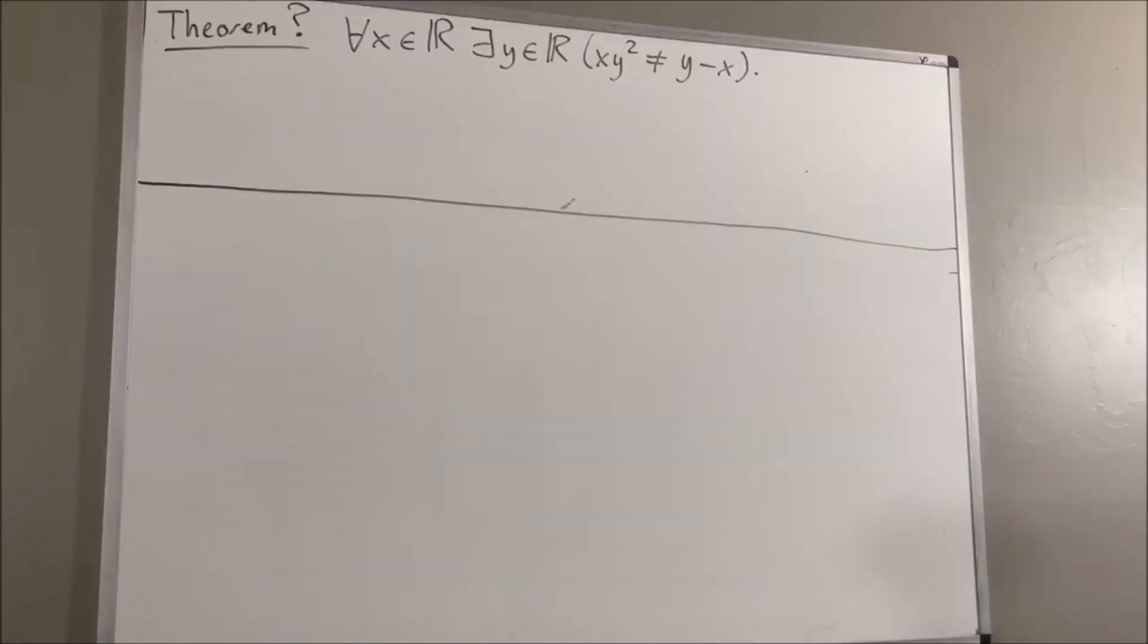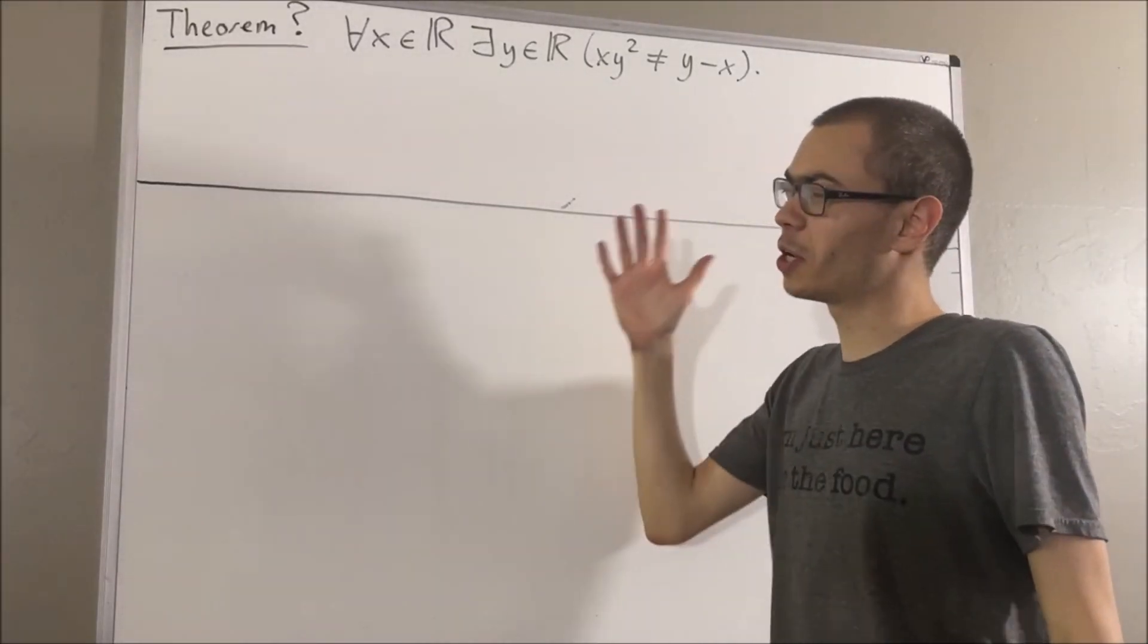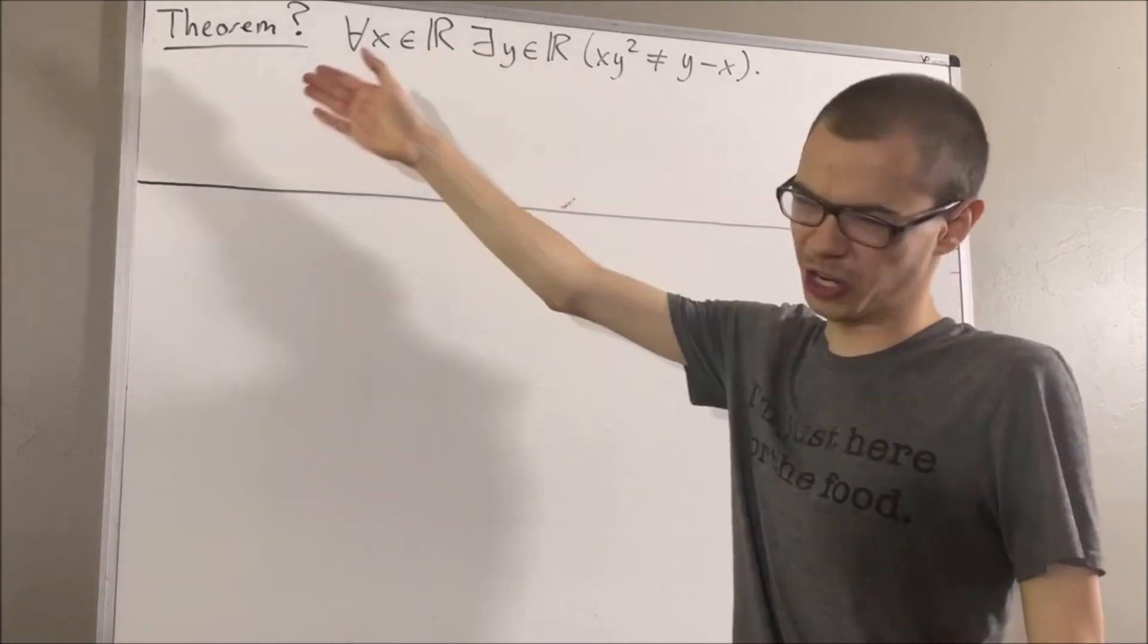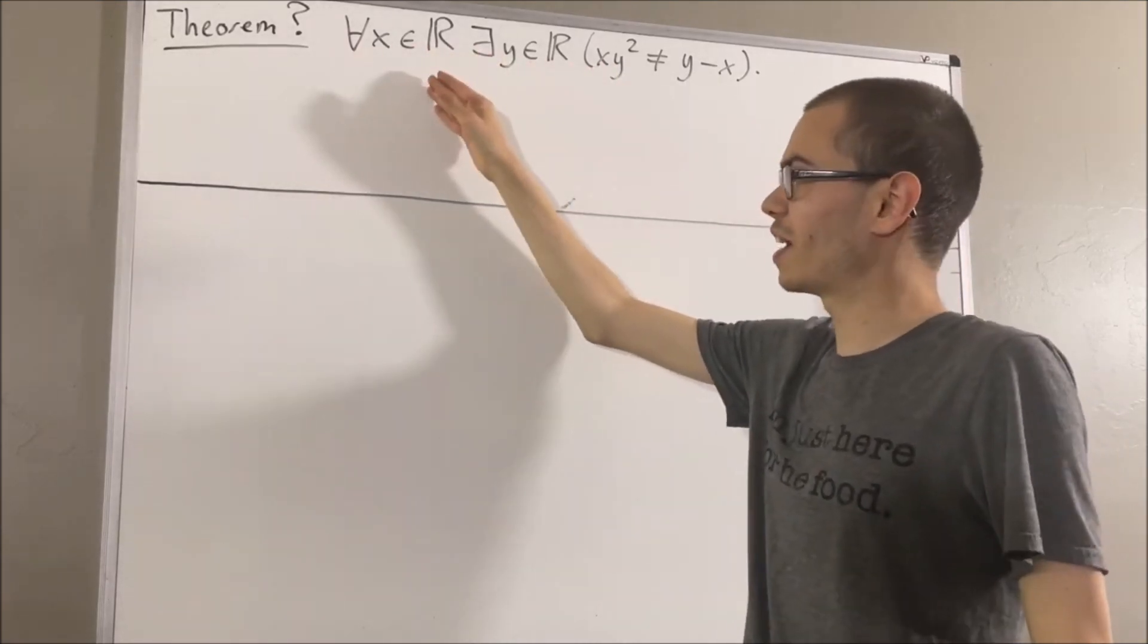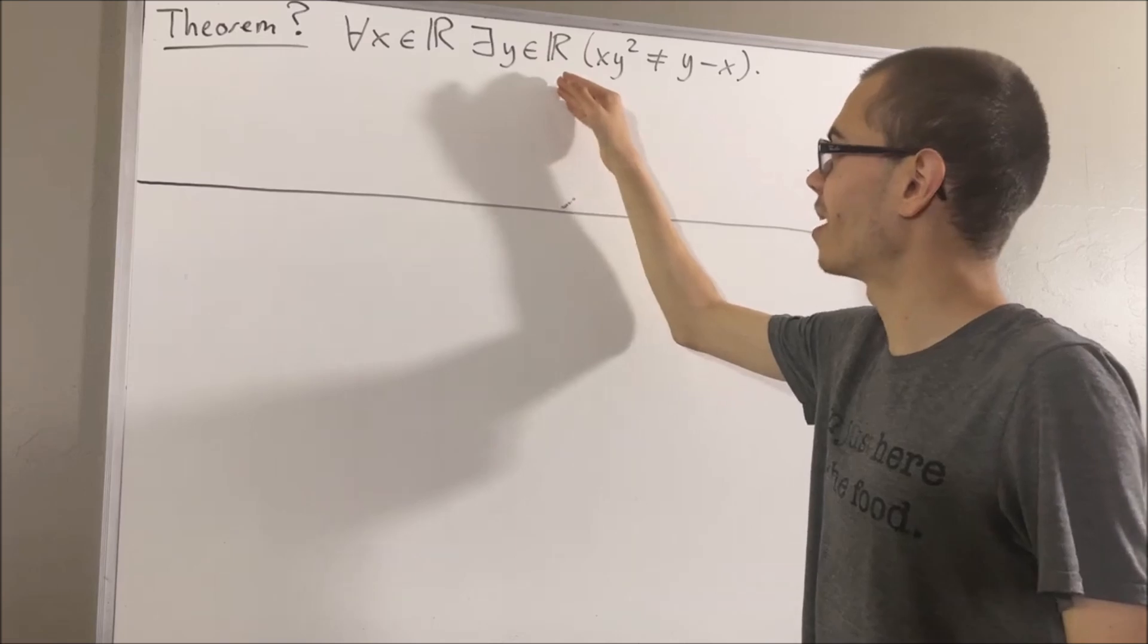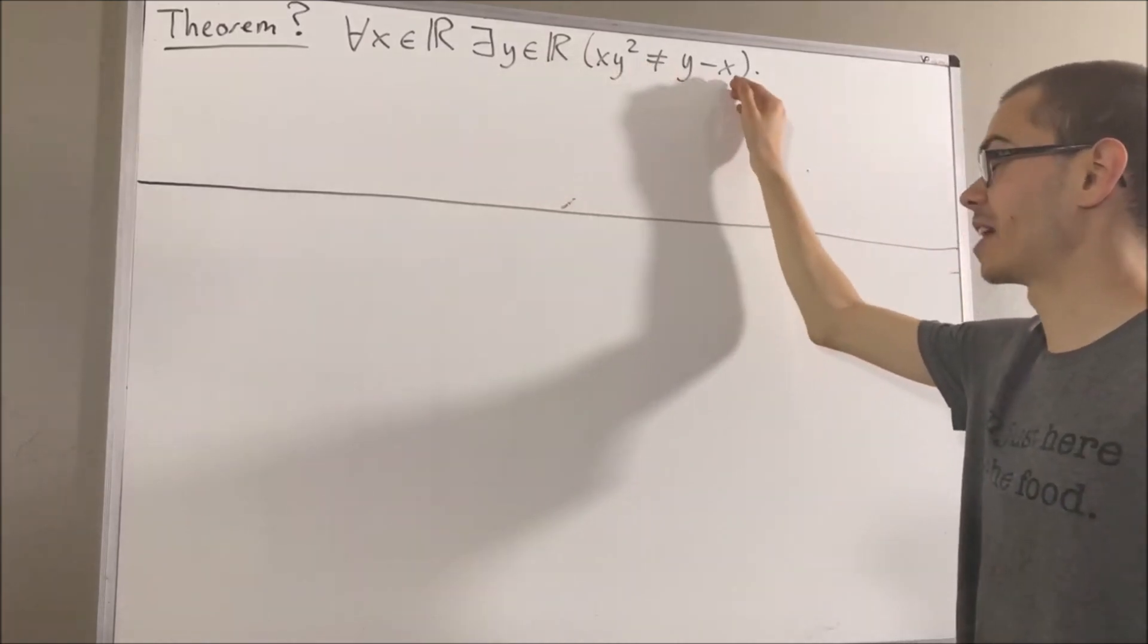Hello! In this video, we're going to prove the following theorem: for all real numbers x, there exists a real number y such that xy squared is not equal to y minus x.